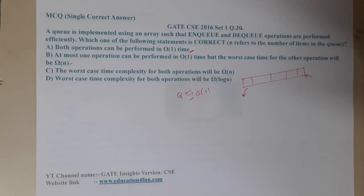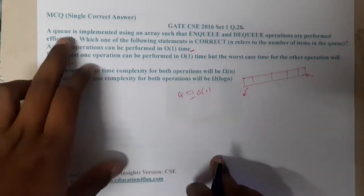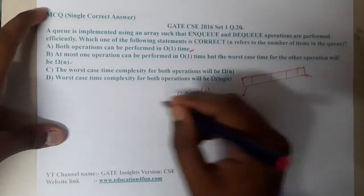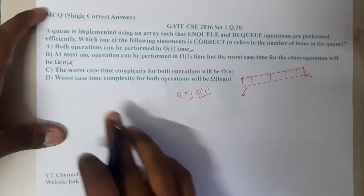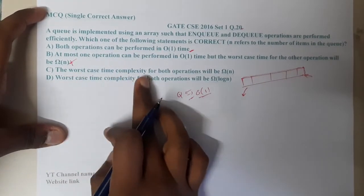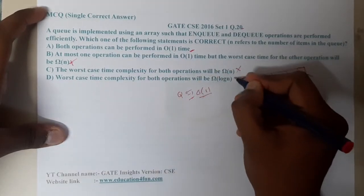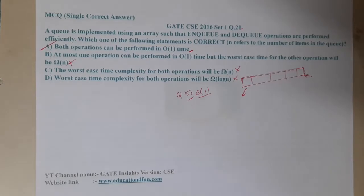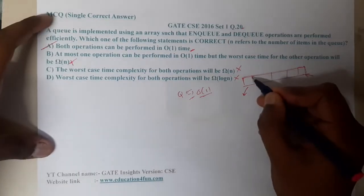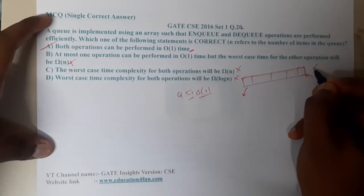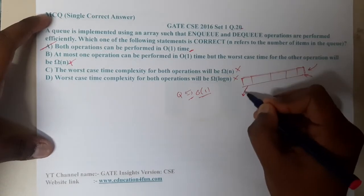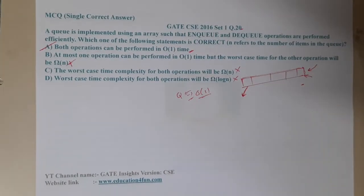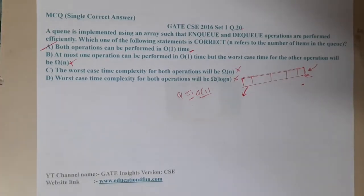Why would it go up to O(n)? You can directly delete the element, right? He is not even asking about a circular queue — it is a normal queue only. So you can get both operations in O(1), meaning this option is wrong. Similarly, the worst case time complexity for both being O(n) is also wrong. Simply, both operations can be performed at O(1): you can add the element at one end and delete from the other end.